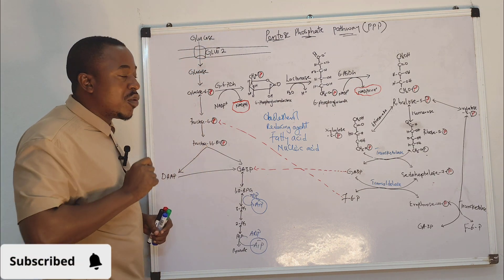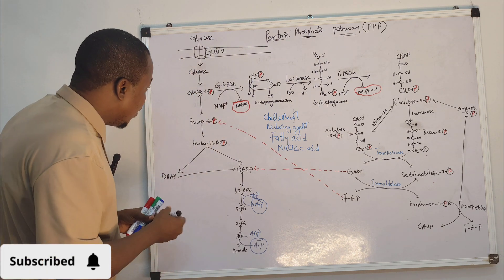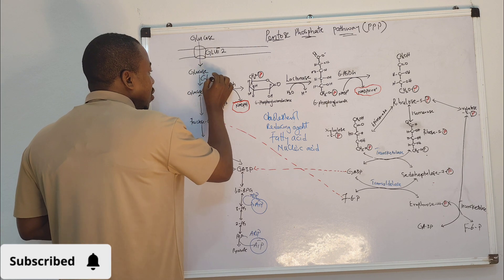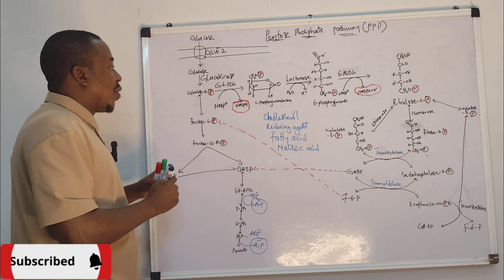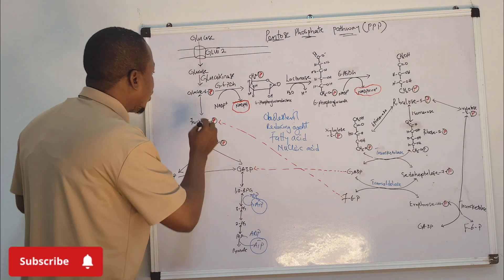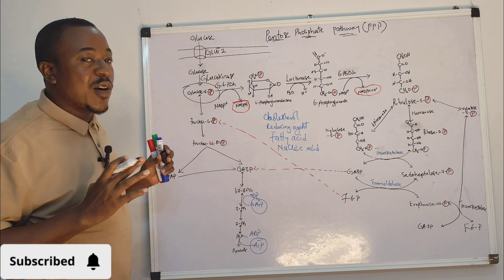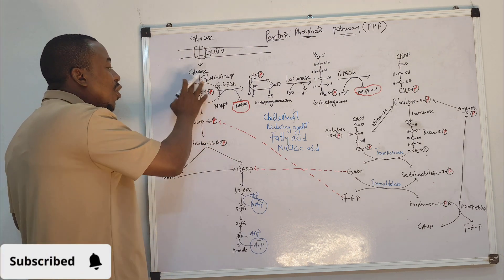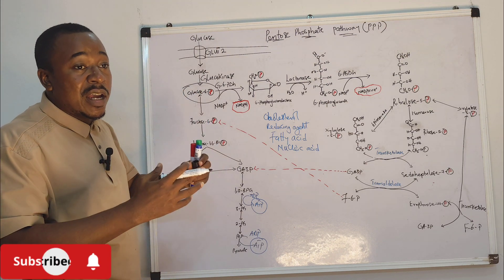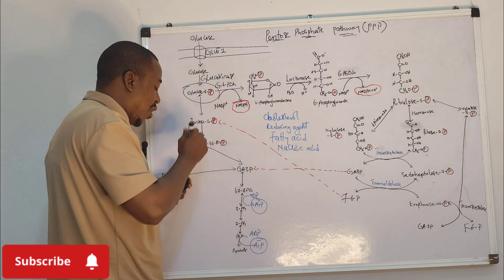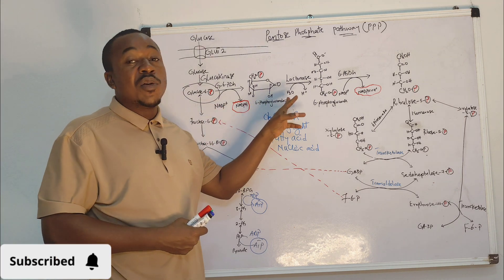So how does the body produce NADPH? Once your body takes up glucose and converts it to glucose-6-phosphate using the enzyme glucokinase — which is the liver enzyme — this glucose-6-phosphate can go through different pathways. It can be used to produce glycogen for energy storage, or it can be converted to 6-phosphogluconolactone.